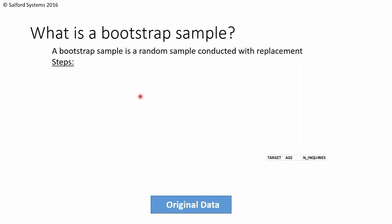To generate a bootstrap sample, we're first going to randomly select an observation from the original data. So this is our first observation. And then we're going to write this observation down here.